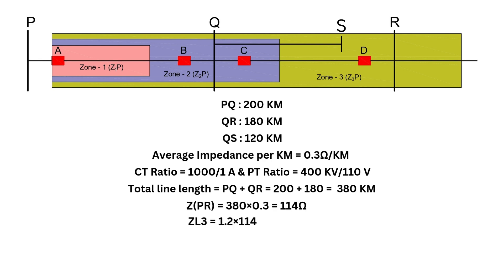Now, we set zone 3 to 120% of this impedance, 1.2 × 114, which is 136.8 ohms. Adjusting for the CT-PT ratio, 0.28 × 136.8 becomes 38.3 ohms. So, the zone 3 setting will be 38.3 ohms. And the time delay for zone 3 is 800 milliseconds.